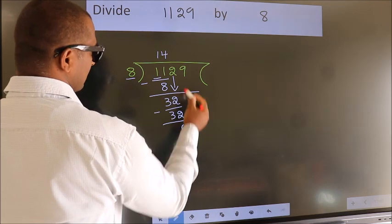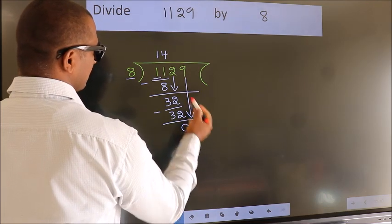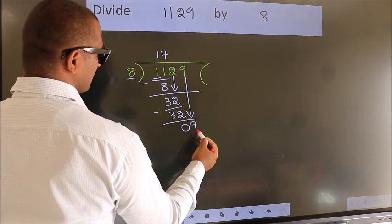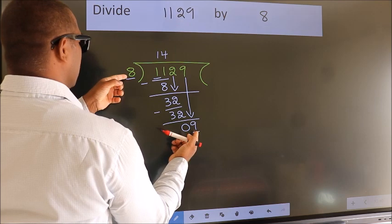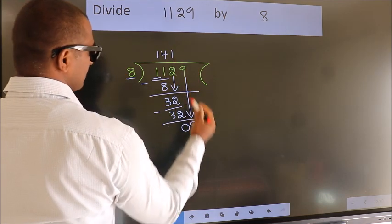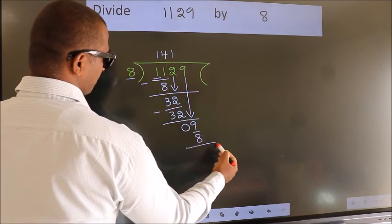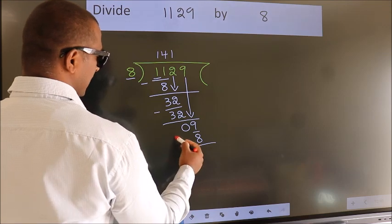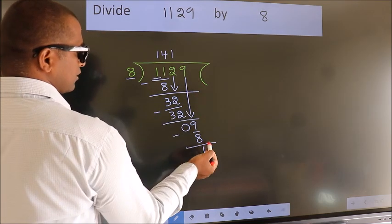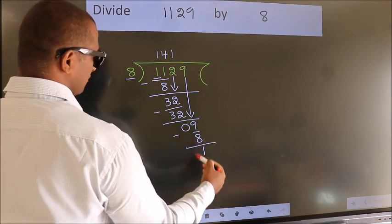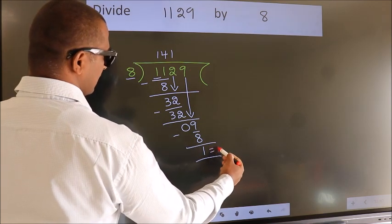After this, bring down the beside number. So 9 down. So 9. A number close to 9 in 8 table is 8 once 8. Now we subtract. We get 1. No more numbers to bring it down, so we stop here. This is our remainder. This is our quotient.